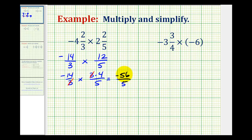This is our product as an improper fraction in simplest form, but we also want to convert this to a mixed number, which we know would also be negative, and now we can divide fifty-six by five.